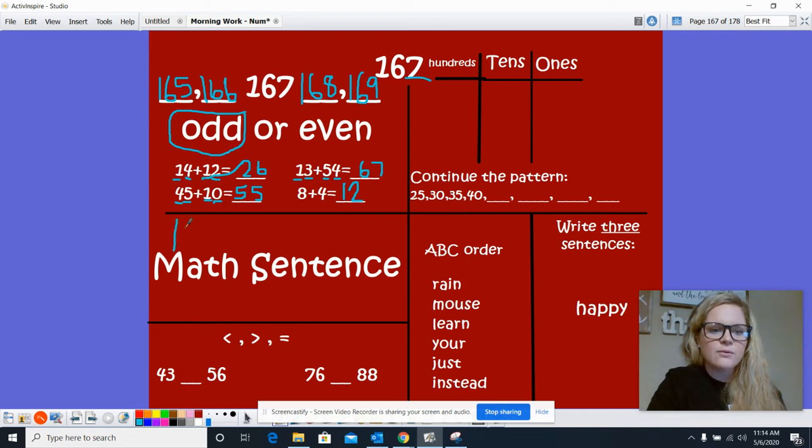We'll do expanded form. 100 plus 60 plus 7 equals 167.